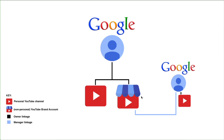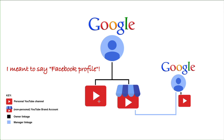Now, if you're familiar with Facebook, you might recognize the setup. Your Google account is like your Facebook account or Facebook profile. And your YouTube channel, which is closely linked to your Google account, is your YouTube profile — what you share with your friends and family. And the YouTube brand account is more like a Facebook page or Facebook group or community that you admin.